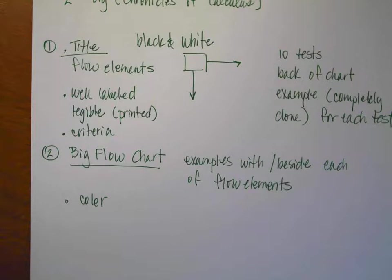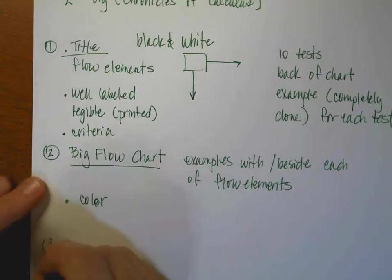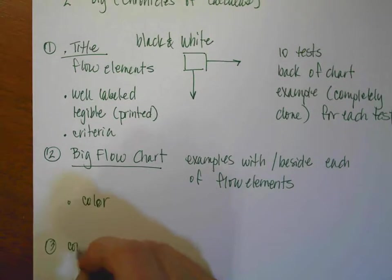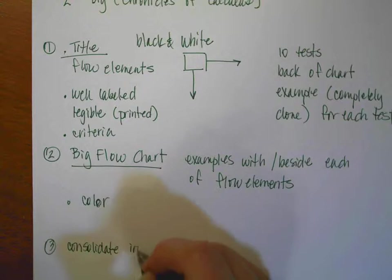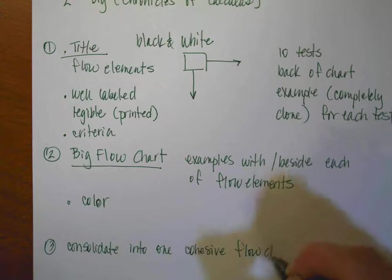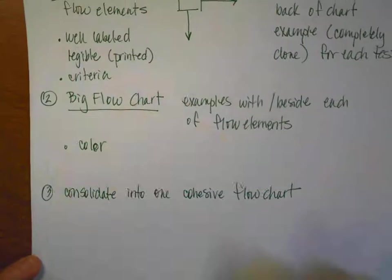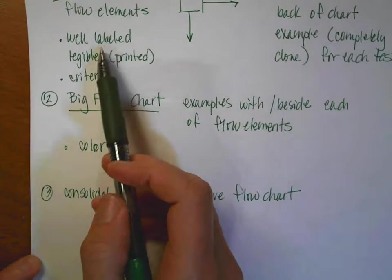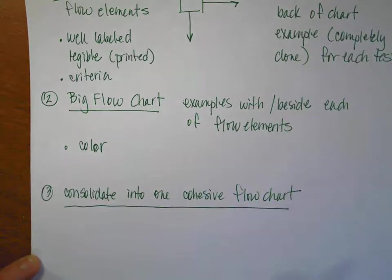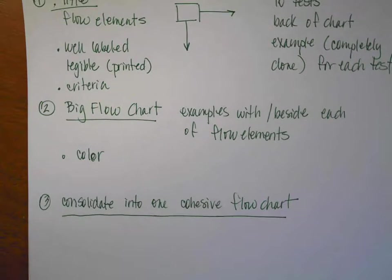So I think that gives most of the information you need — we'll talk about it more in class. As we go through this process, what I'd like to do is come up with one good one. So the third part of this process is that we are going to consolidate into one cohesive flow chart, and that will be what everybody uses. The big one goes out in the hall, the little one is what you turn in, and then we will consolidate that information and maybe combine elements because you each will probably have independent ideas, and then we will make one cohesive one.